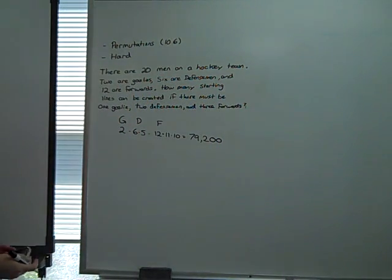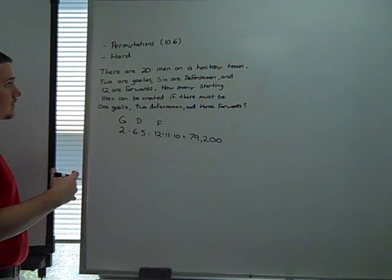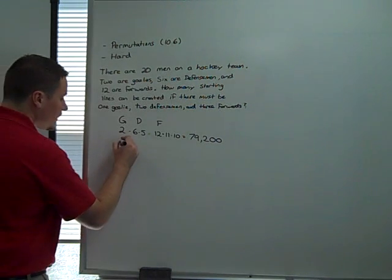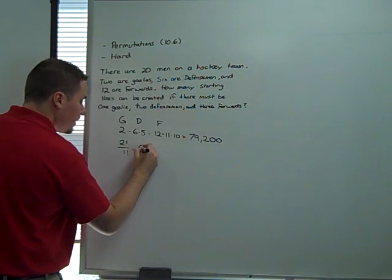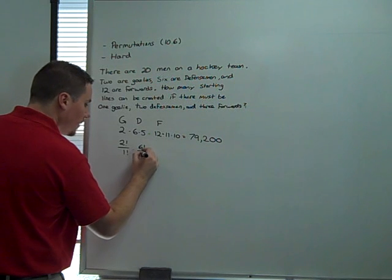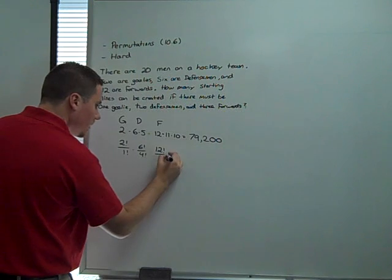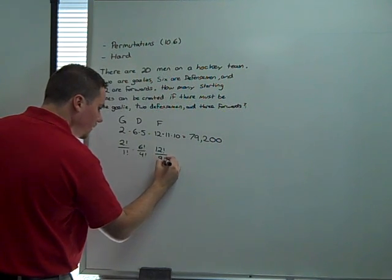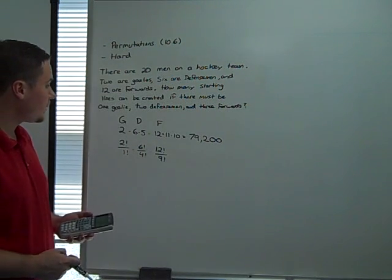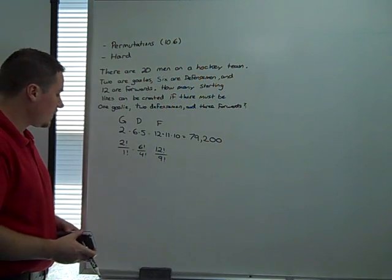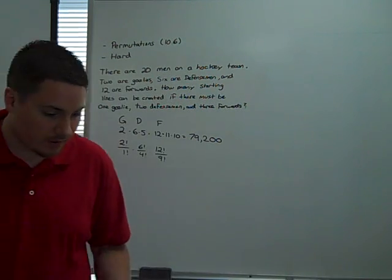I also want to take the time to use the factorial notation for distinguishable permutations. And that is 2 factorial over 1 factorial times 6 factorial over 4 factorial times 12 factorial over 9 factorial. That is using the formula for permutations of a given set. So there we have it, 79,200 ways for you to have a starting lineup.